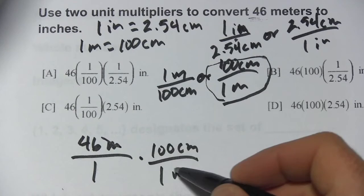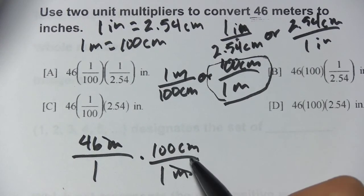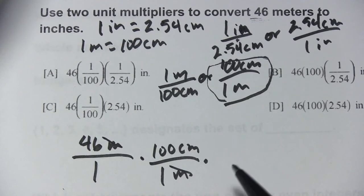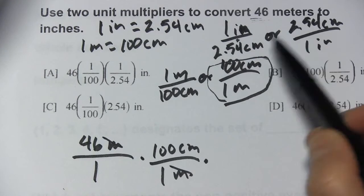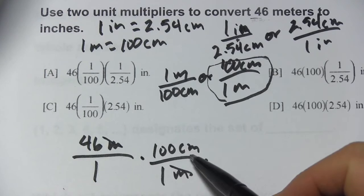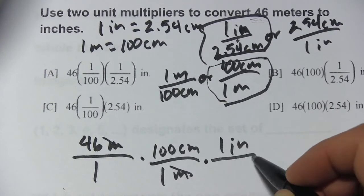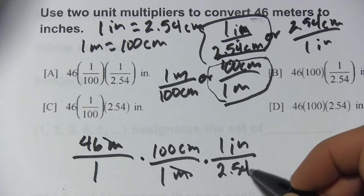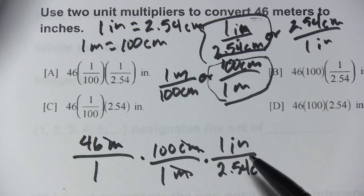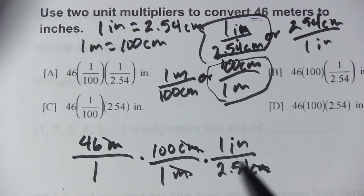The meters cancel — top and bottom the same, I can cross them out. Now we're in centimeters. I want to get from centimeters to inches, so I choose the unit multiplier with centimeters on the bottom, since centimeters is on top — and that's 1 inch over 2.54 centimeters. These centimeters cancel, and we end up in inches — that's where we want to be. We started at meters, now we're in inches.